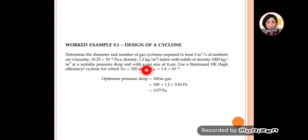The desired cut size is 4 micrometer. This cyclone design uses Stairman high efficiency with the Euler and Stokes 50 number fixed. This is a constant. First, we can determine the pressure drop from the given 100 meter gas height of the cyclone. We multiply by the density and gravity.